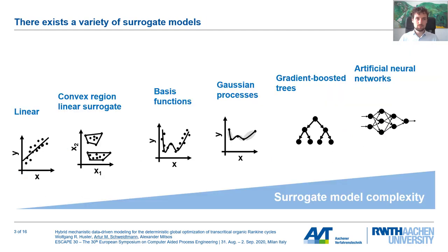A variety of surrogate models or data-driven models exists, ranging from linear models to artificial neural networks. In this talk, we focus on artificial neural networks because they are capable of learning highly nonlinear relationships to high accuracy.